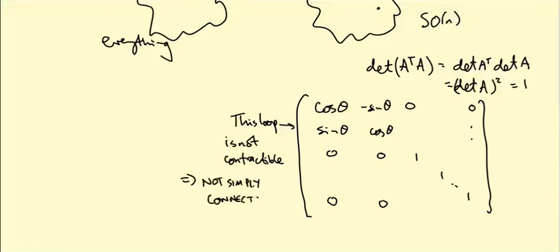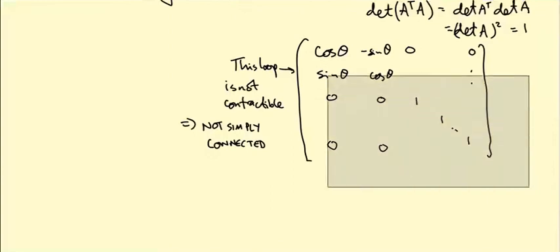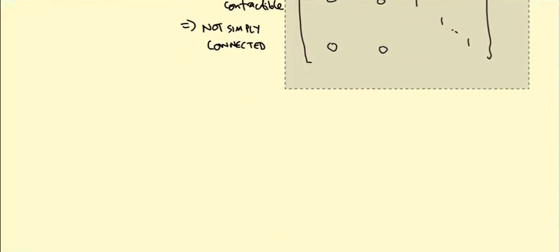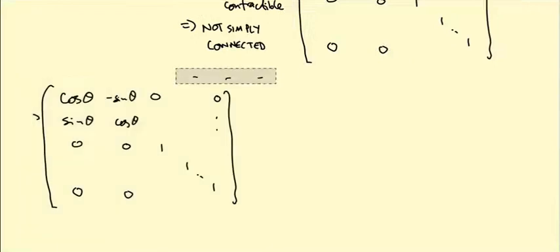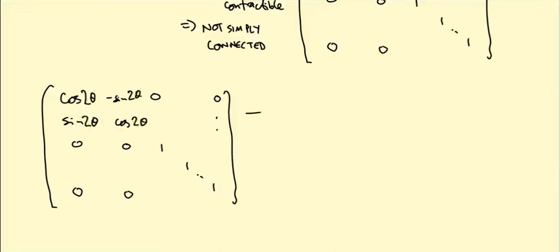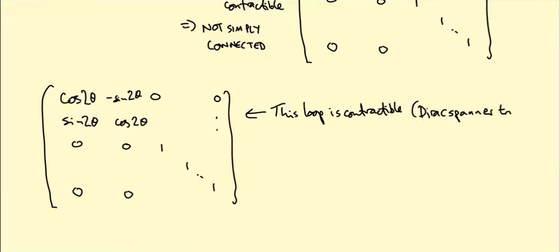However, there's an amazing fact: if you go twice around this loop you get something which is contractible. Instead of putting θ in the matrix, put 2θ - so θ goes from 0 to 2π and we're going around the loop twice. This loop is contractible. You can see this using something called the Dirac spanner trick. So it turns out going around twice is contractible.